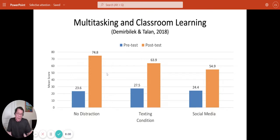What you can see in the post-test after several classes is that the no distraction condition, you got the greatest amount of learning. And then the texting condition, you got a significantly lower level of learning. And then the social media condition, you got an even lower level of learning there.